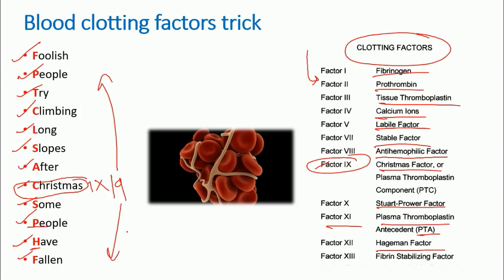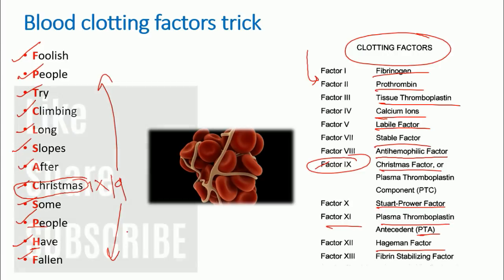So that's how you can remember all thirteen blood clotting factors by knowing: 'Foolish people try climbing long slopes after Christmas, some people have fallen.' These factors also act in a sequential fashion for the blood clotting process, so if you remember the names of all these factors, you can easily draw the blood clotting scenario and the mechanisms whenever they ask any question in the exam.